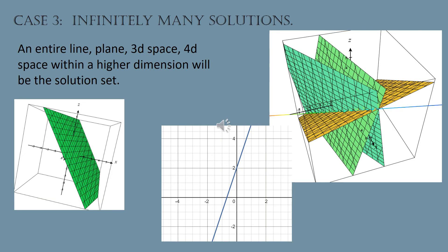If you have infinitely many solutions for a linear system, the points in the solution set lie on some linear space — meaning the space can be described by an equation in which all variables are raised to the first power. For example, three planes can intersect in a line, and every point on that line satisfies the original system. If you started with two-by-two equations that reduced to a line, it meant all the equations were really the same equation, and they graph right on top of each other with every point on that line being a solution.